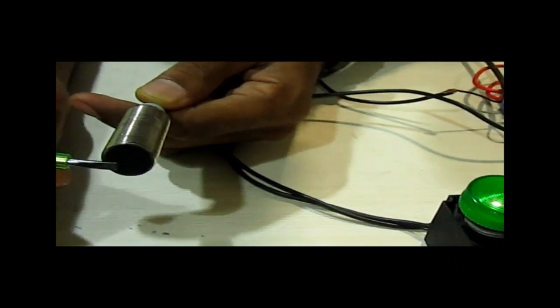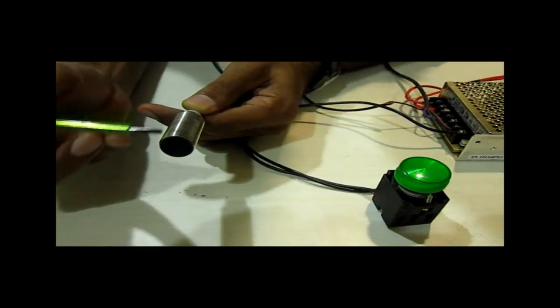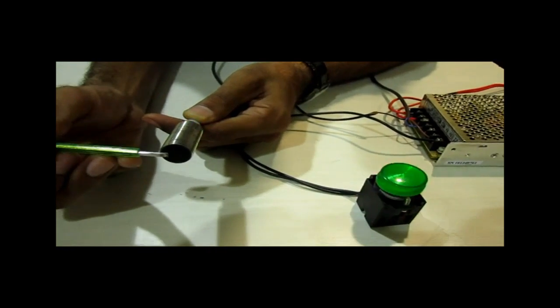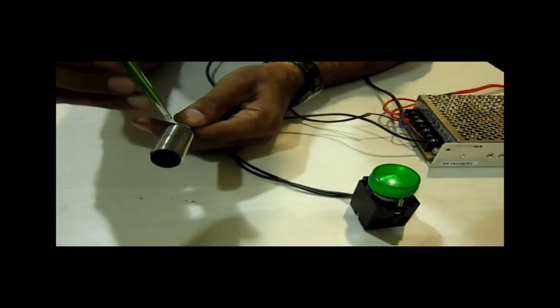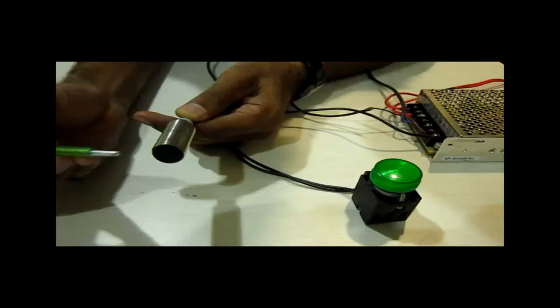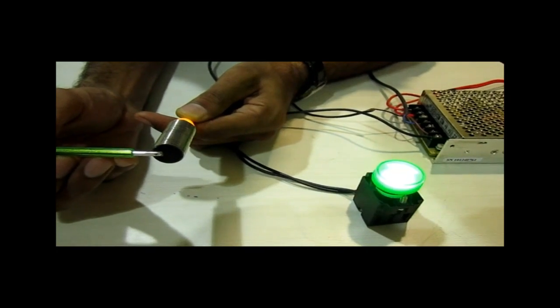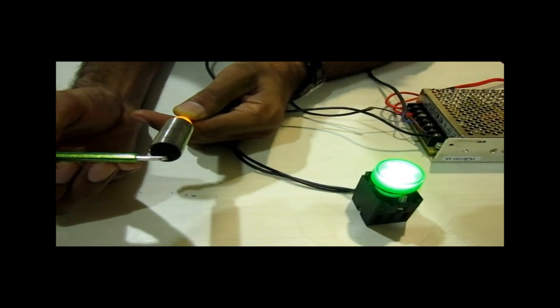These induced eddy currents affect the magnetic field because there are some losses in that case. These losses are detected by the circuit inside the sensor, which gives indication that some metallic object is in the magnetic field area. That's how it works.